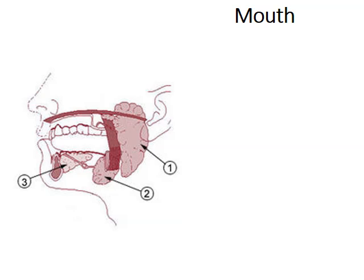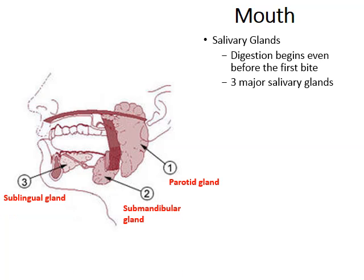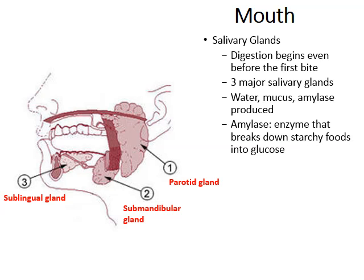The digestion process begins in the mouth because that's where our salivary glands are. Digestion even begins before we take our first bite — when we see food and know we're about to eat, our salivary glands start to release saliva. There are three major salivary glands: the parotid gland, the submandibular gland, and the sublingual gland. In general, these glands will release and secrete water, mucus, and amylase.